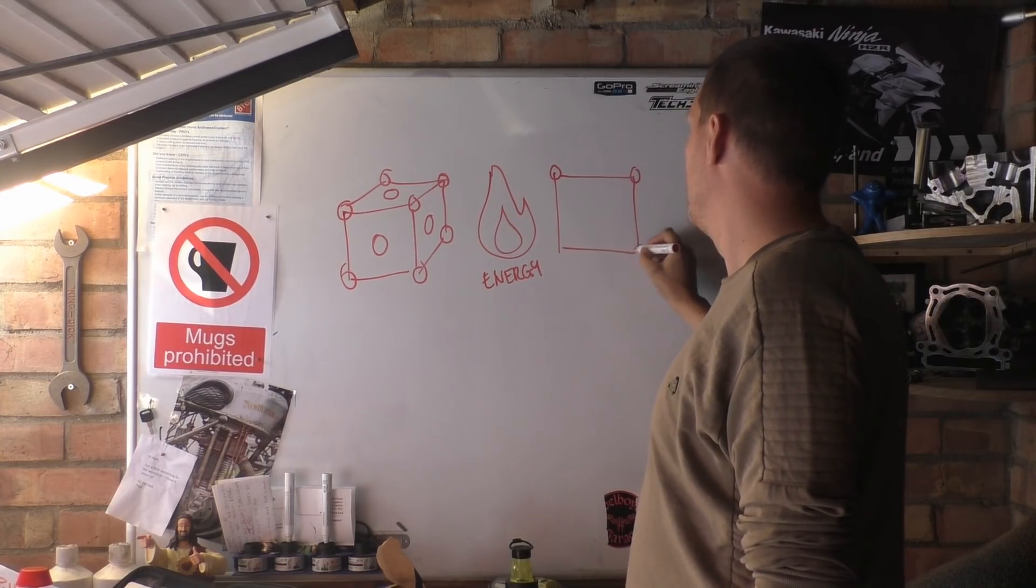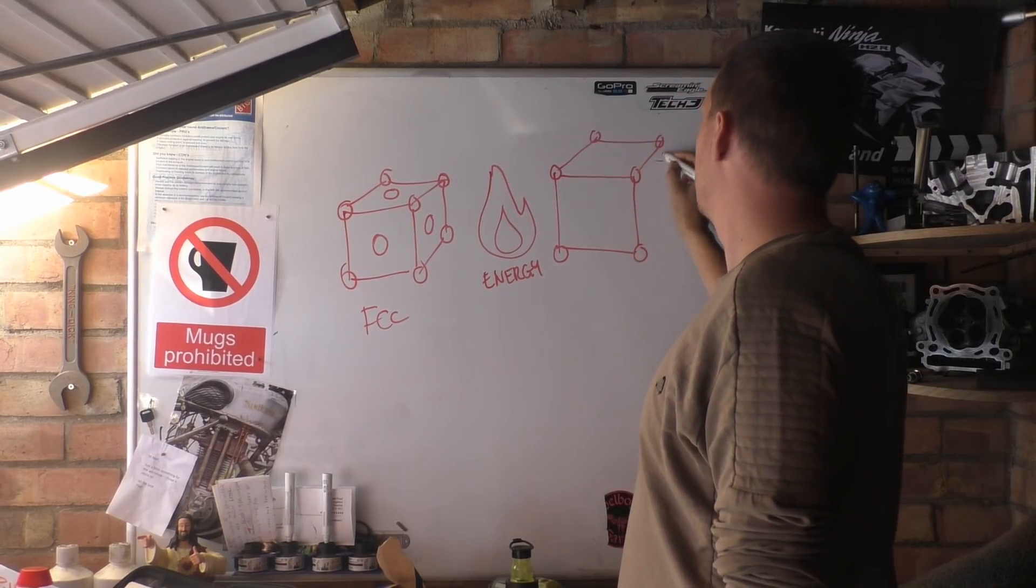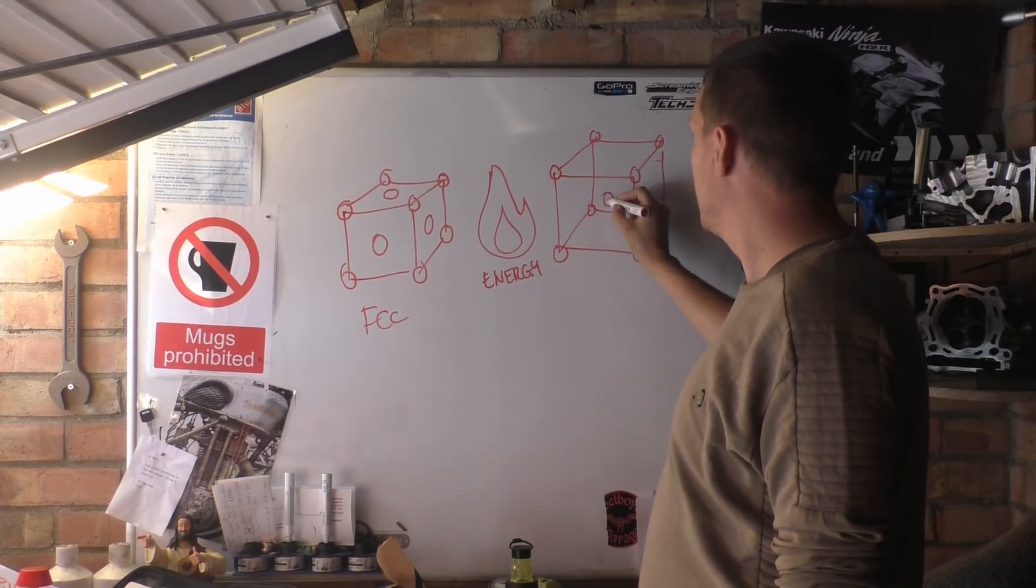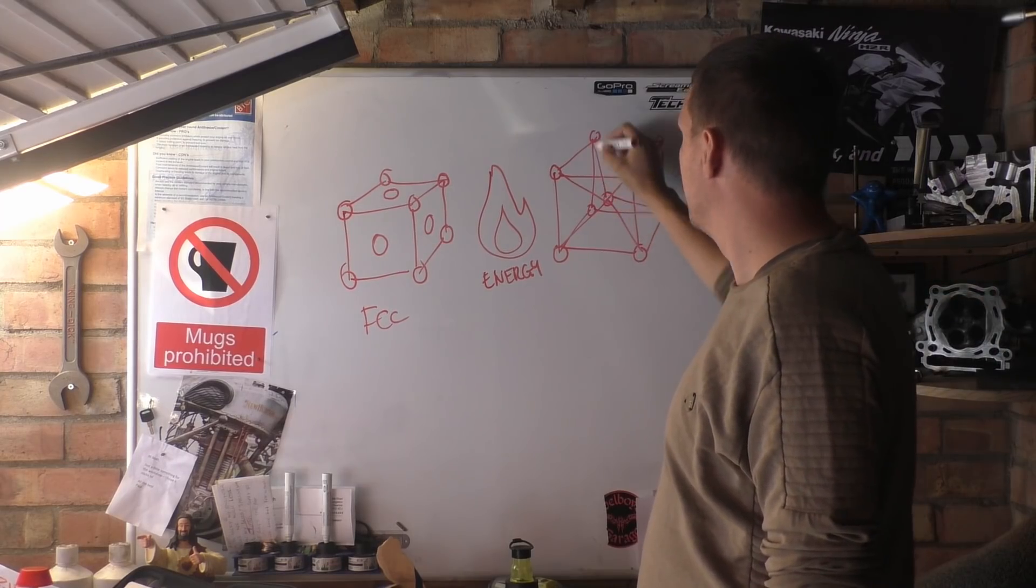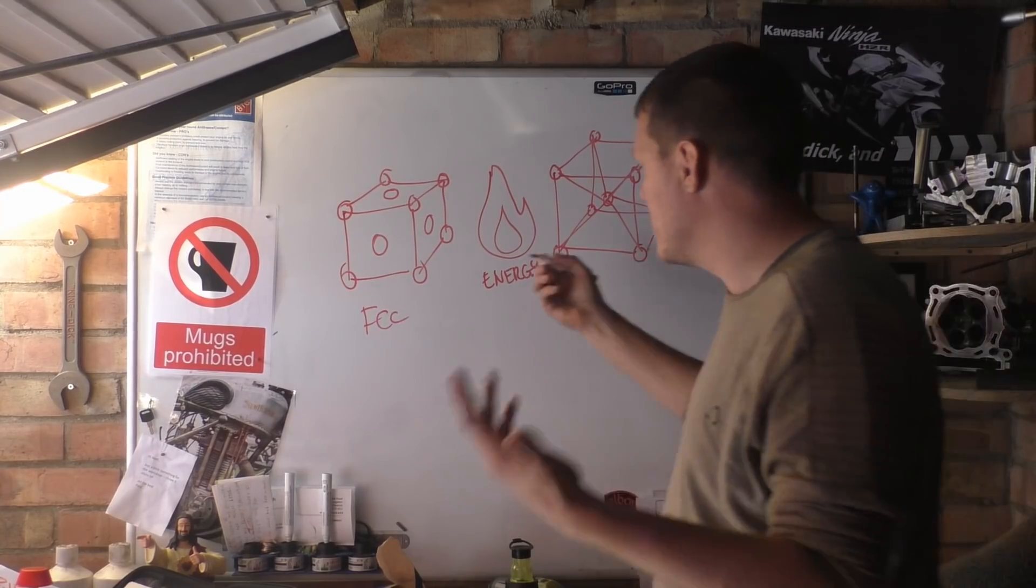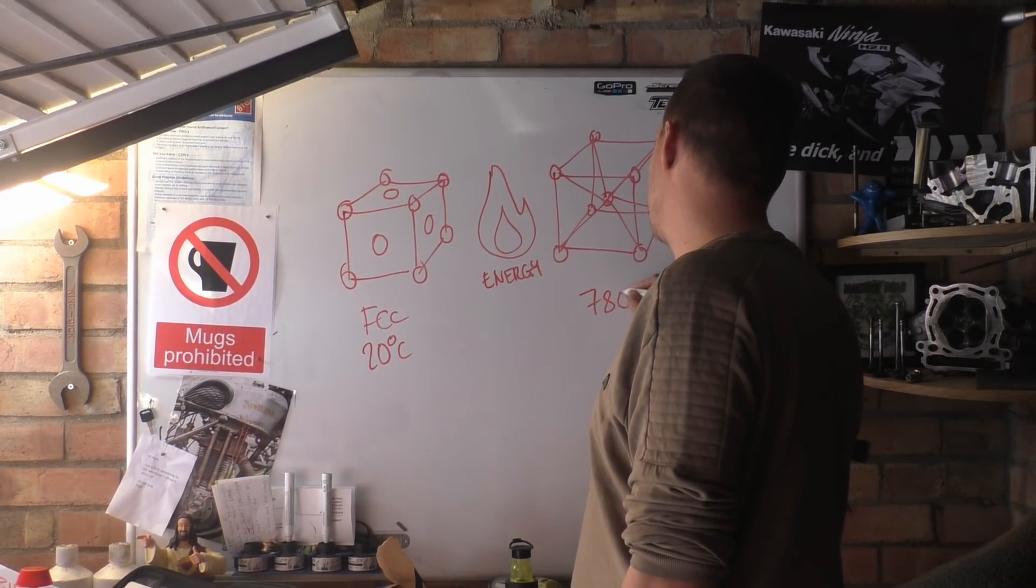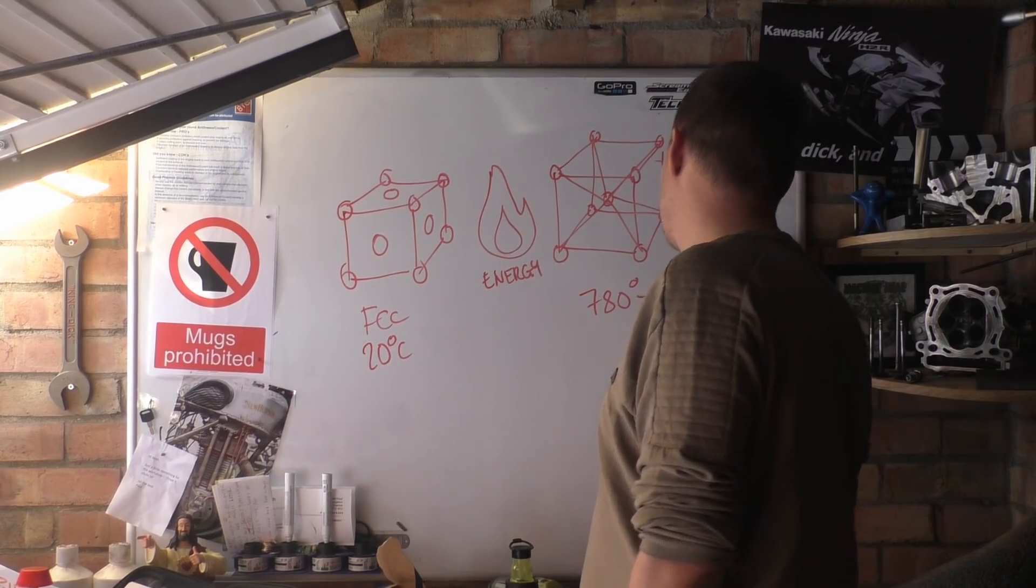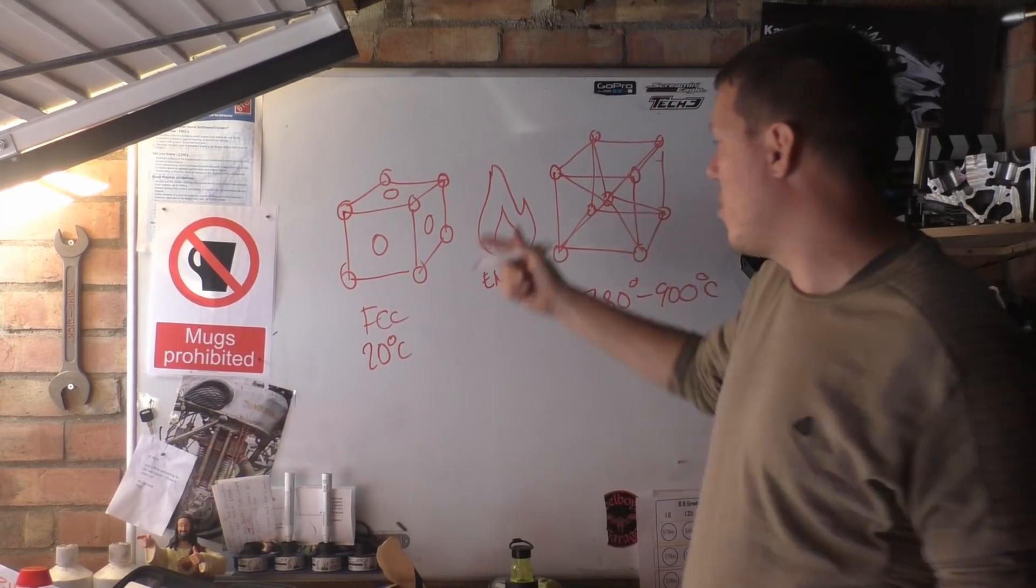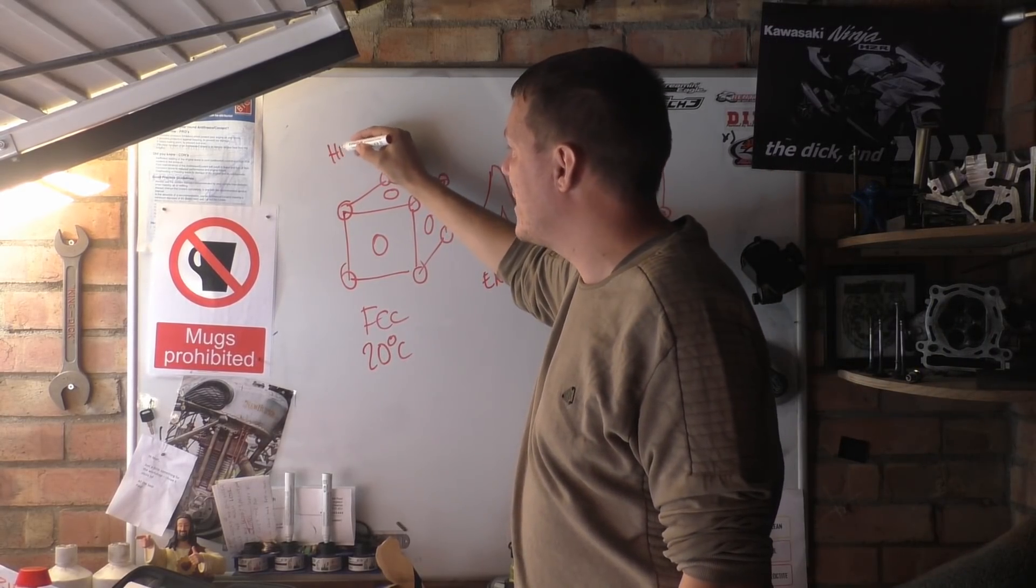So when you heat it up what happens is when you have your face centered cubic like this, it transforms so there's an atom on the inside like so, suspended inside there. Now this is while it's at high temperature, so we'll just say this is 20 degrees C and then we'll just say this is 780 to 900 something like that degrees C. The problem is when we cool it back down again it's going to resort straight back to this face centered cubic malarkey. This is a bit of both worlds - it's hardish and it's malleable.